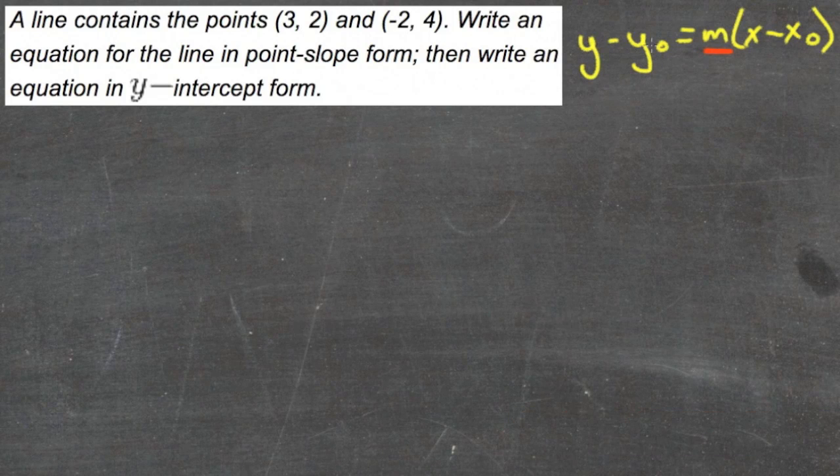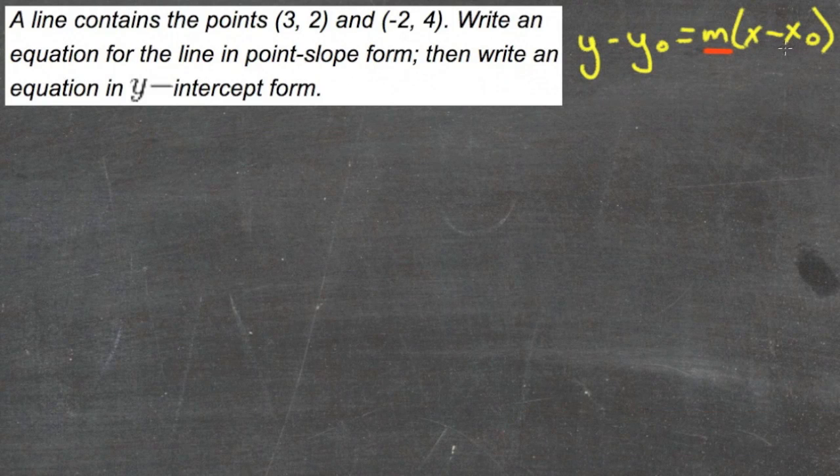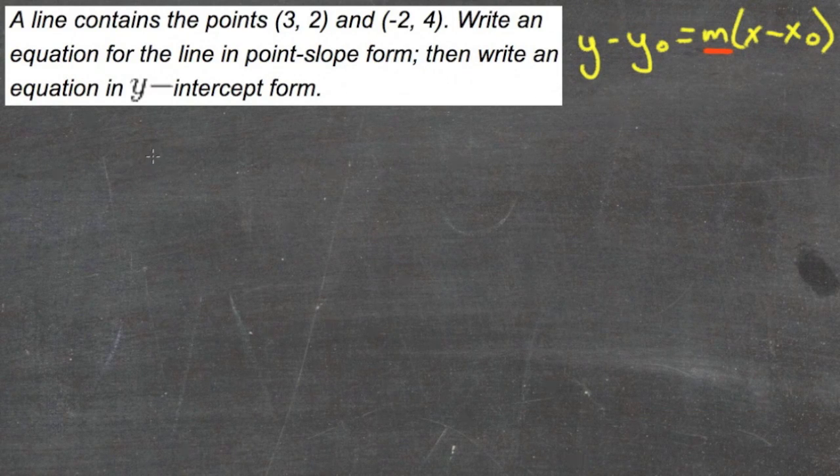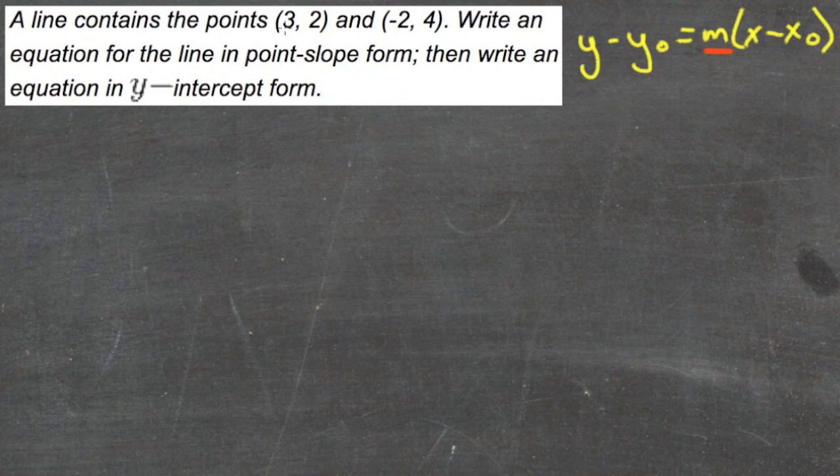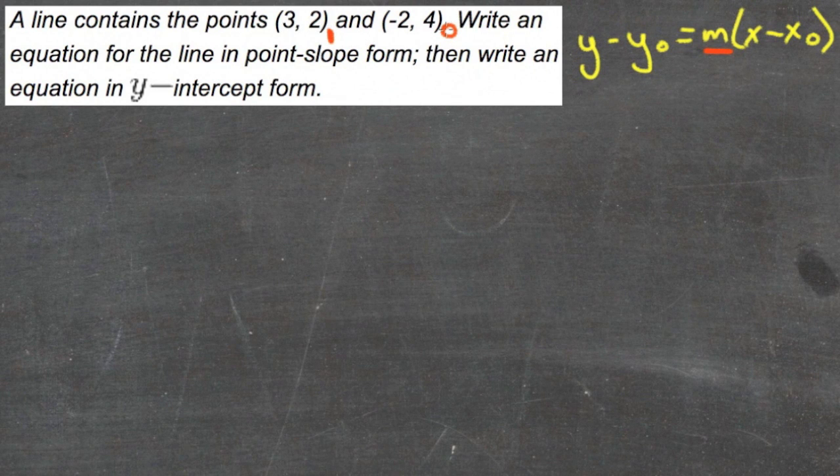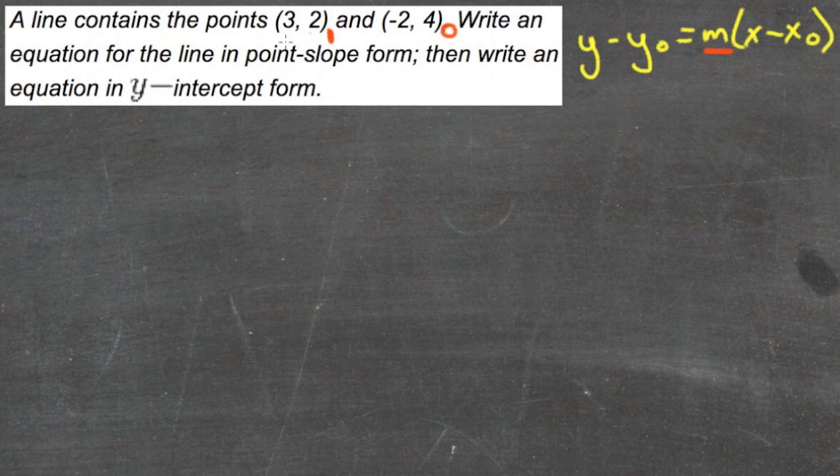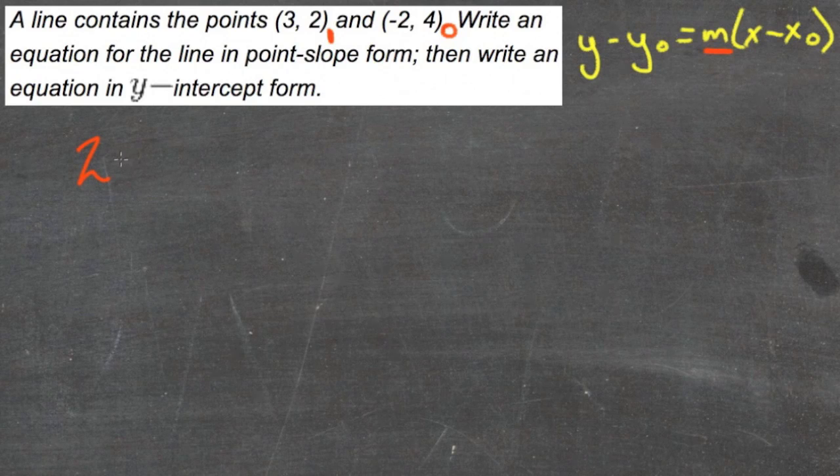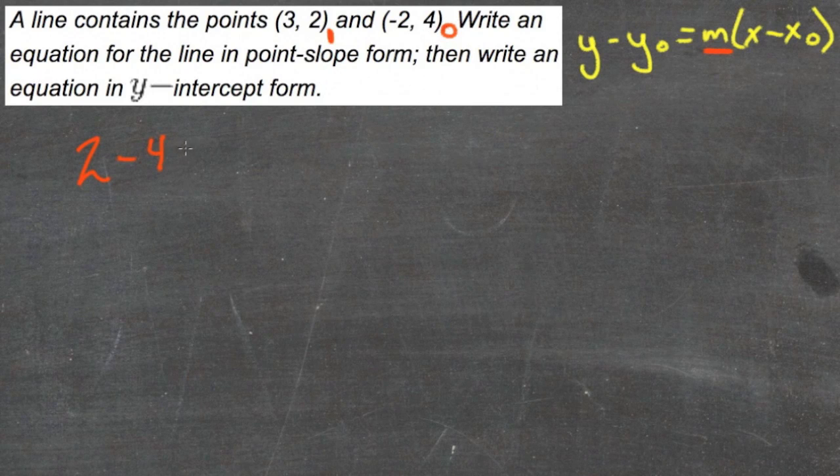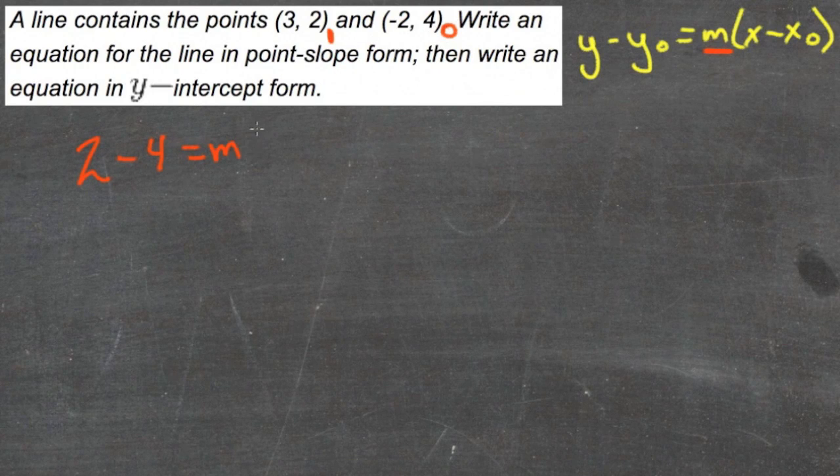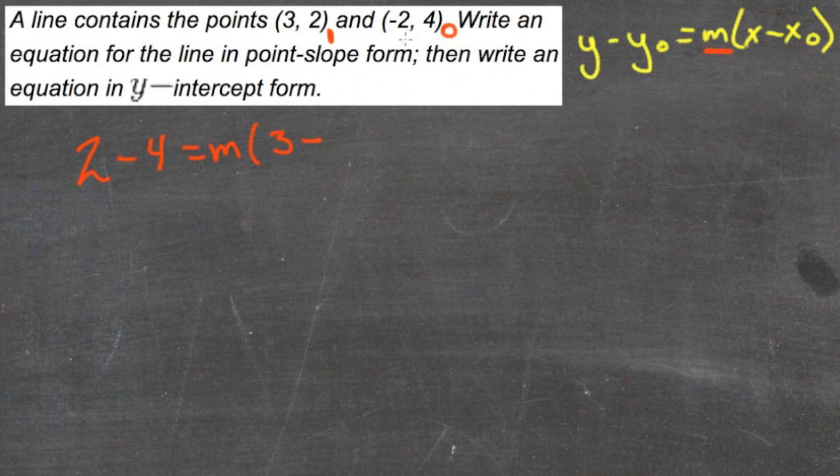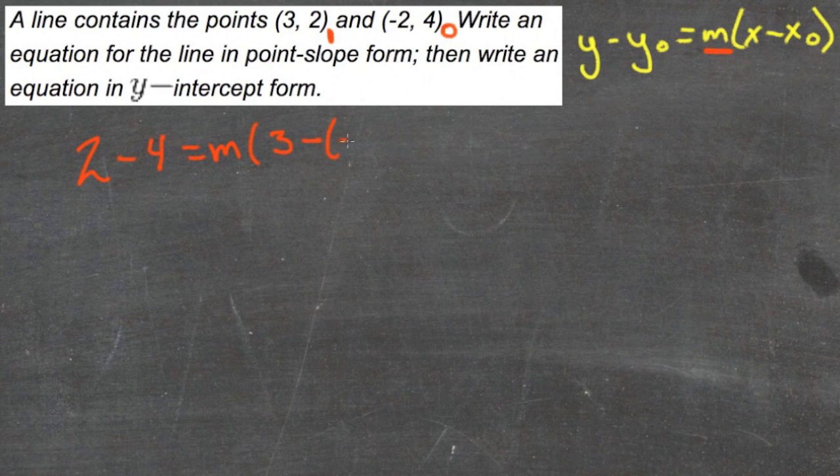We have two y-coordinates and we have two x-coordinates. So if we substitute those values in, we should be able to solve for m. Let's call this point 1 right here and this point 0 over here. So that means that we'll take our y-coordinate 1, which is 2, and subtract our y-coordinate 0, which is 4, and that'll be equal to m times our x-coordinate 1, which is 3, minus our x-coordinate 2, which is -2.